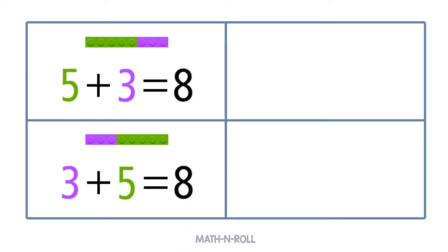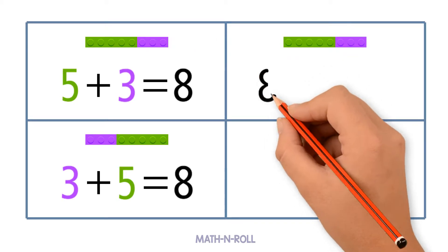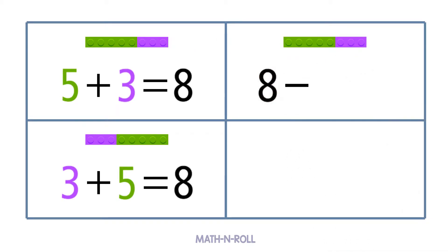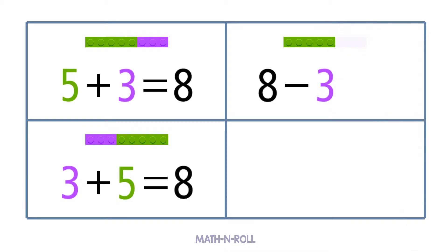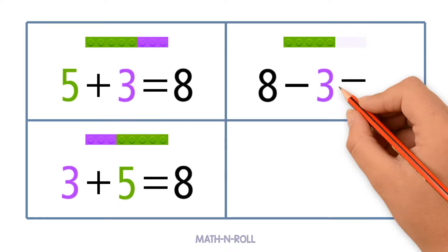What about subtraction? Related facts use 3 numbers. To subtract, we start from the largest number and subtract one of the smaller numbers. We have 8 pieces and we take away 3 purple pieces. How many pieces do we have left? We have 5. So 8 minus 3 equals 5.